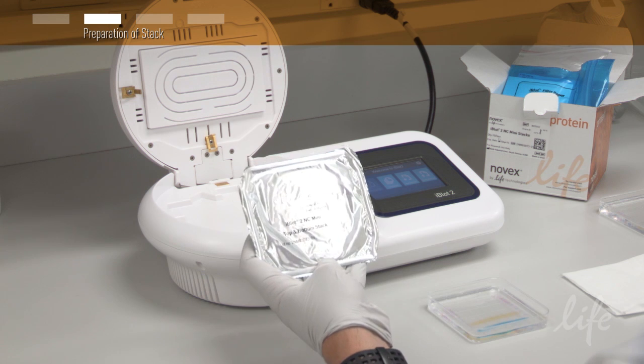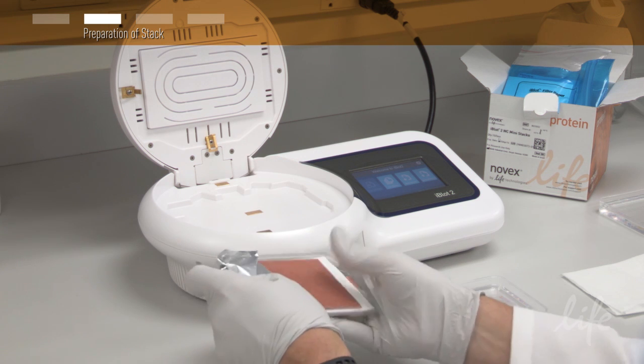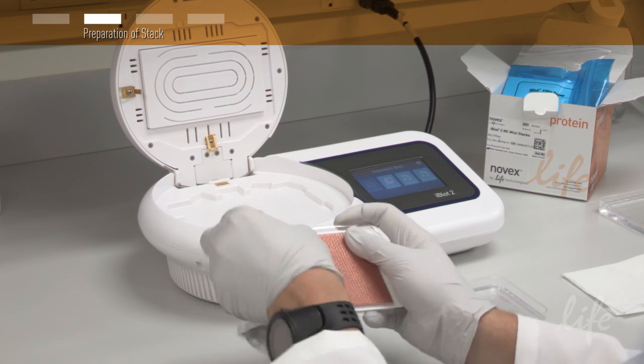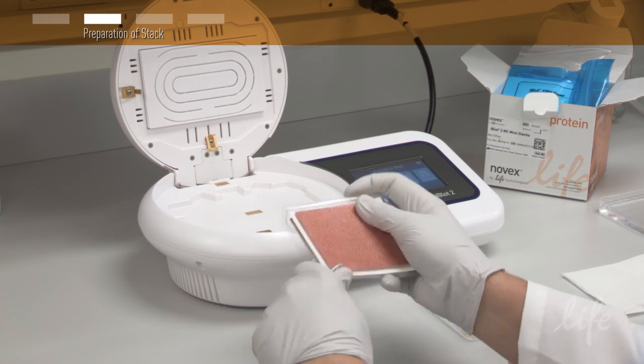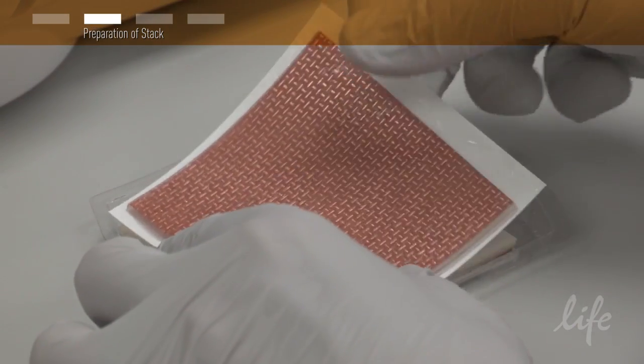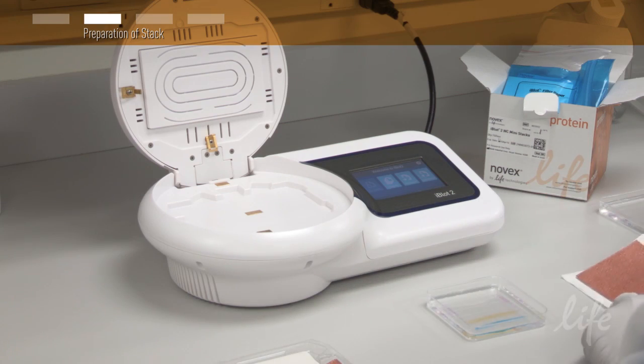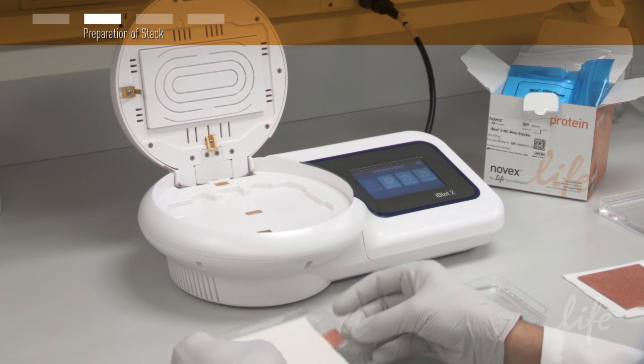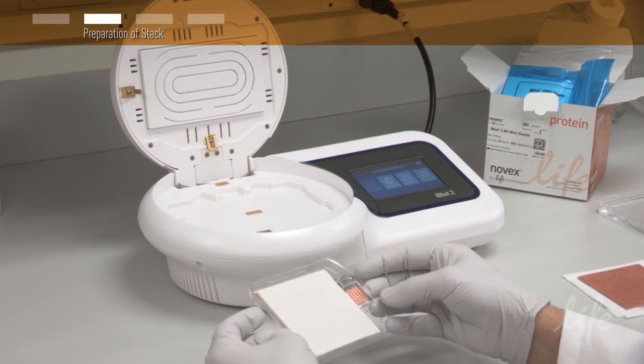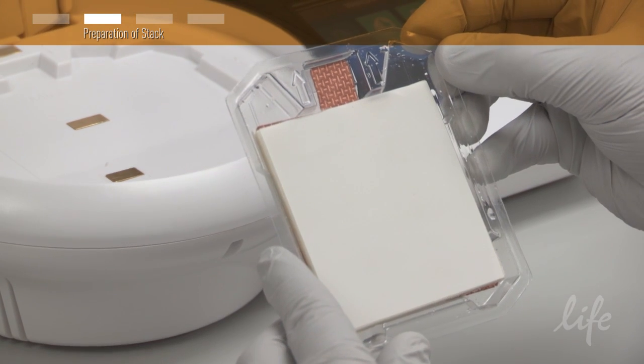Next, unseal the transfer stack. Notice that the top and bottom stacks are in the same tray. Separate the top stack and set it aside. Keep the bottom stack in the plastic tray. You'll notice that the bottom stack contains your PVDF or nitrocellulose membrane.